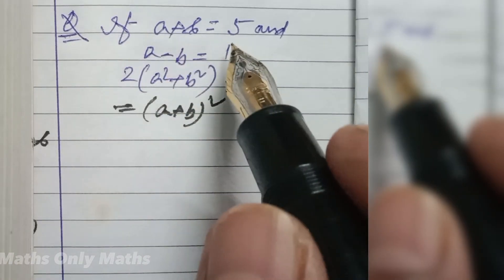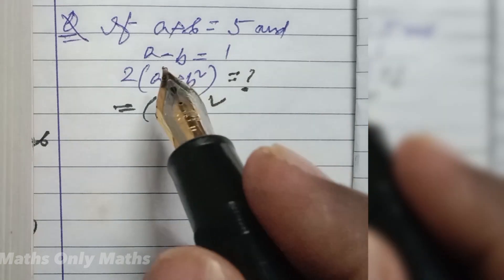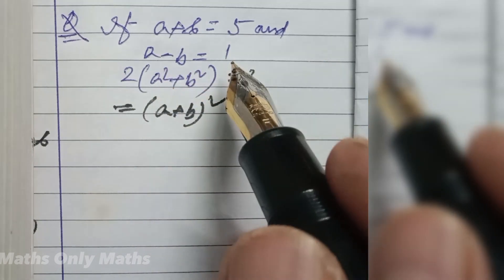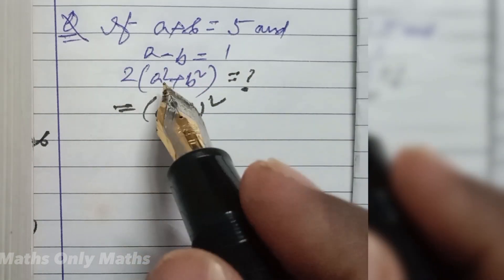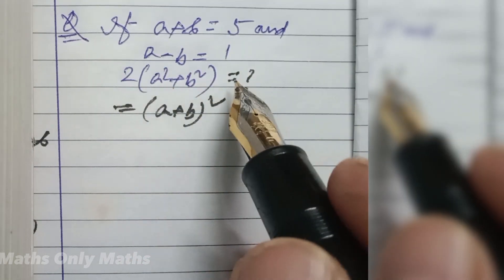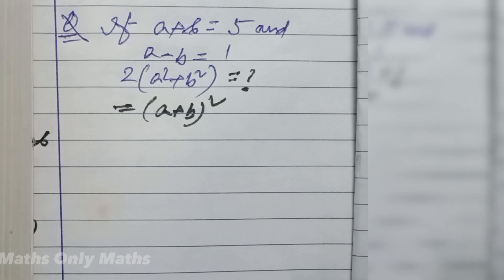If a plus b equals 5 and a minus b equals 1, what is the value of 2 into a square plus b square?